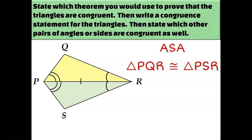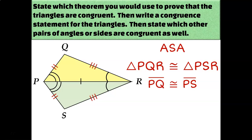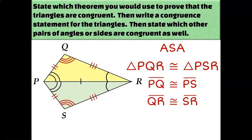Everything we've done so far is what you already knew from the previous lesson. But what we're learning today is that since I've now proven those two triangles are congruent, I can say all their other pairs of corresponding parts are also congruent. For example, PQ is congruent to PS — they're the first two letters of each triangle's name. Likewise, QR is congruent to SR — the last two letters. And angle Q is congruent to angle S — the middle letter in each triangle's name.